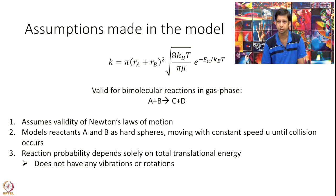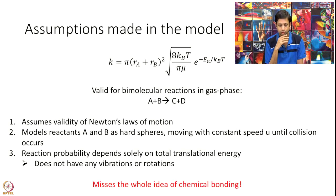It does not have any vibrations or rotations. Why? Because I have a perfect sphere. My molecule does not have a bond to vibrate. Collision theory does not look into the structure of your reactants at all. That is very important - transition state theory builds over this missing factor. That's really the biggest limitation of collision theory. It does not have the whole idea of chemical bonding in it.